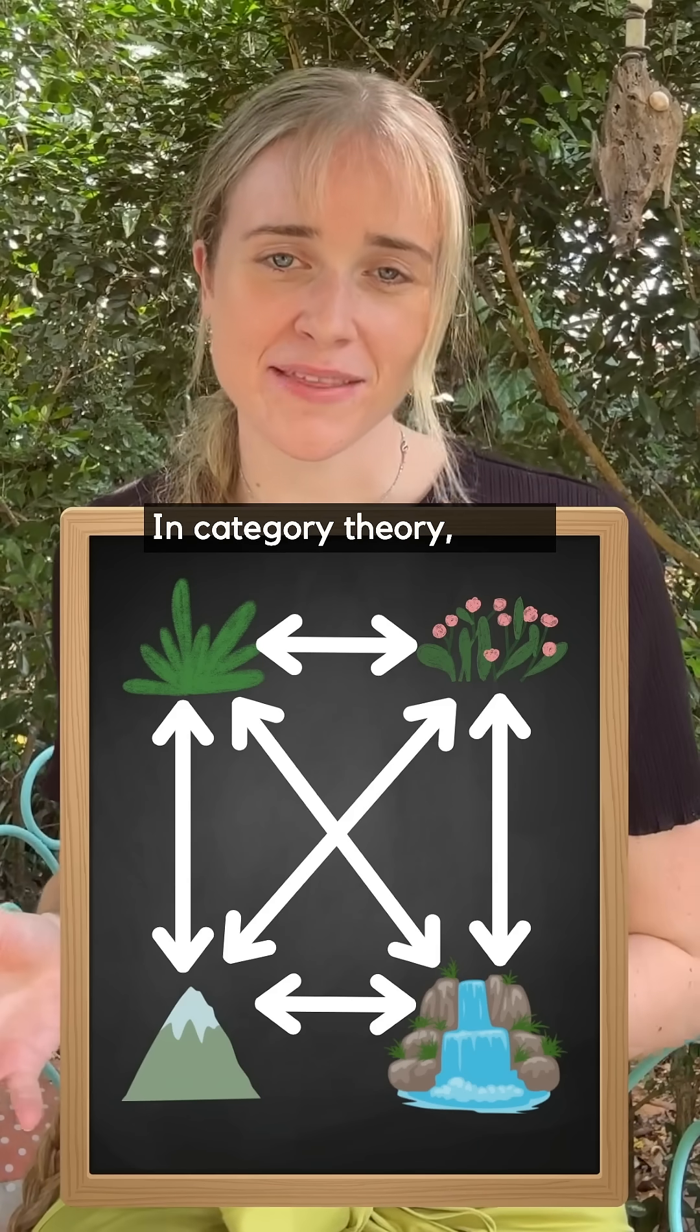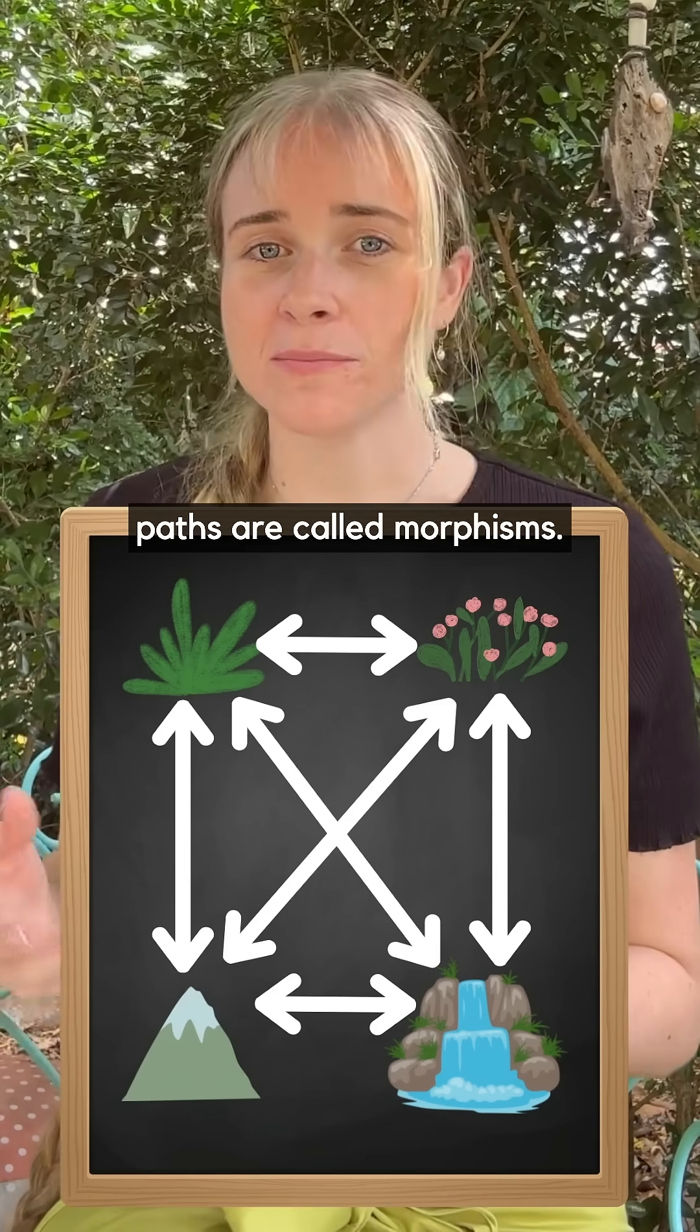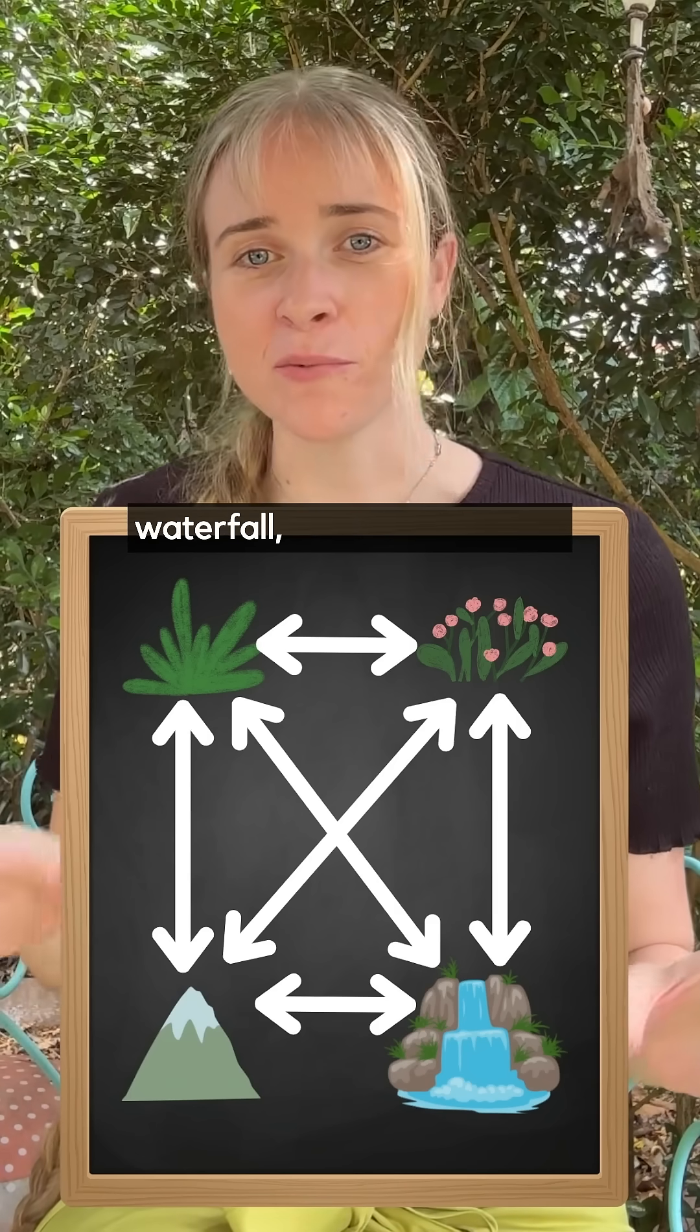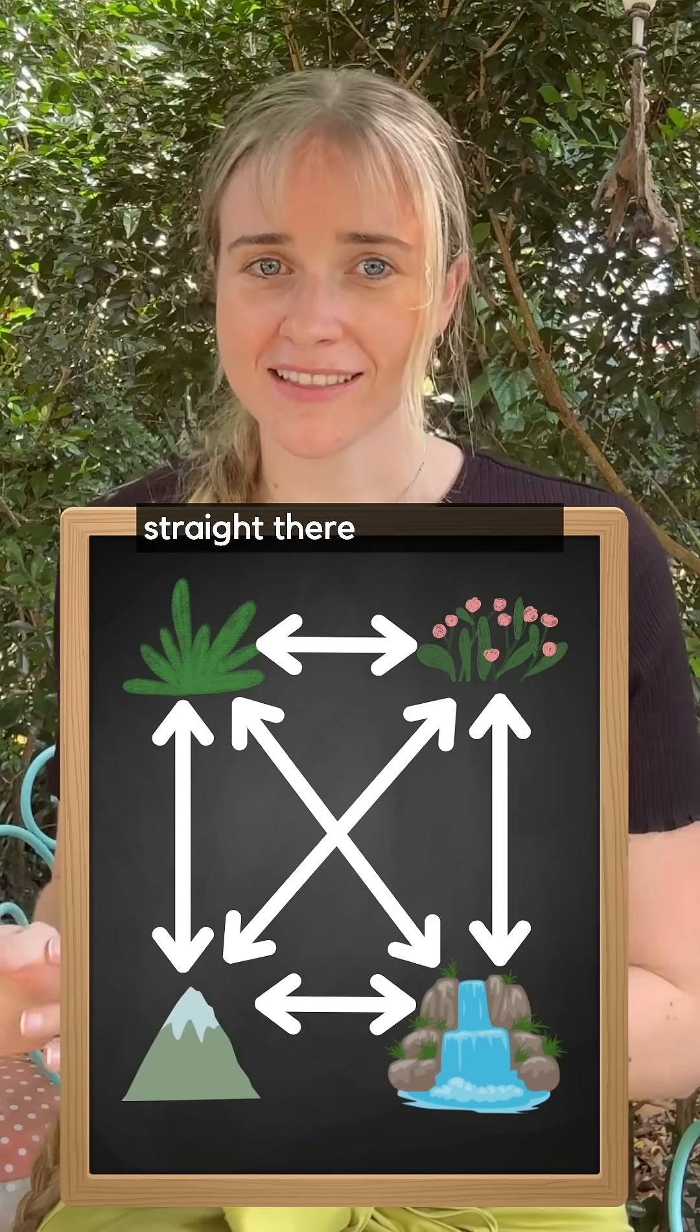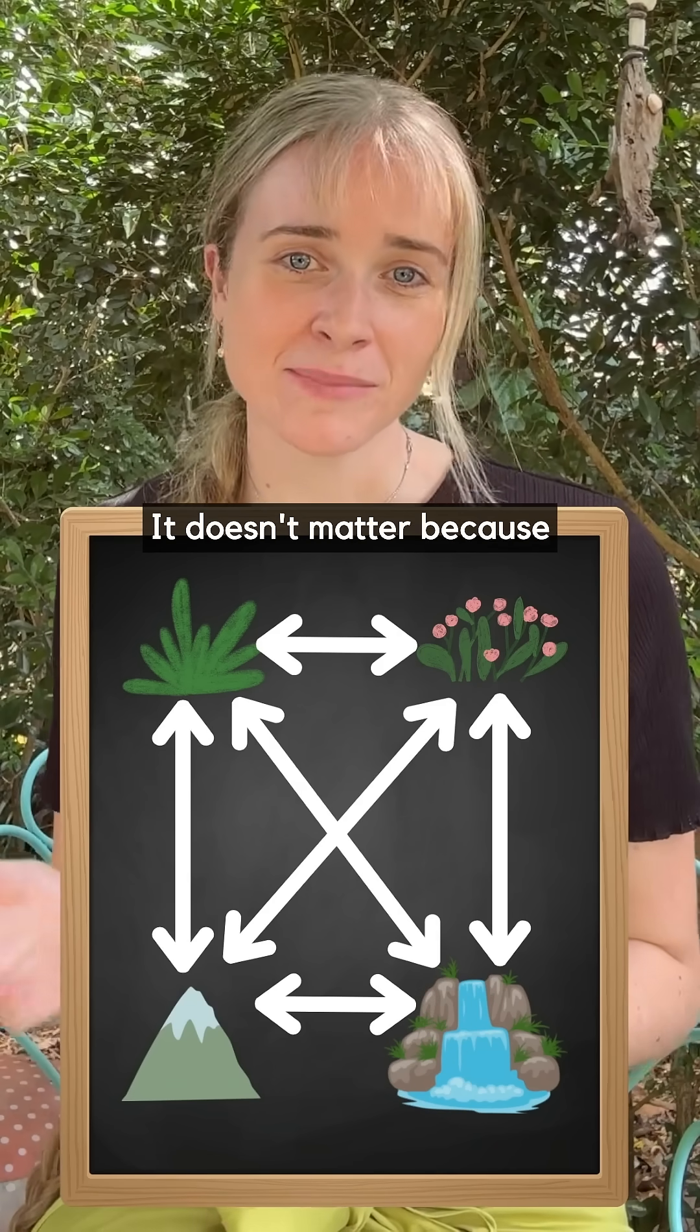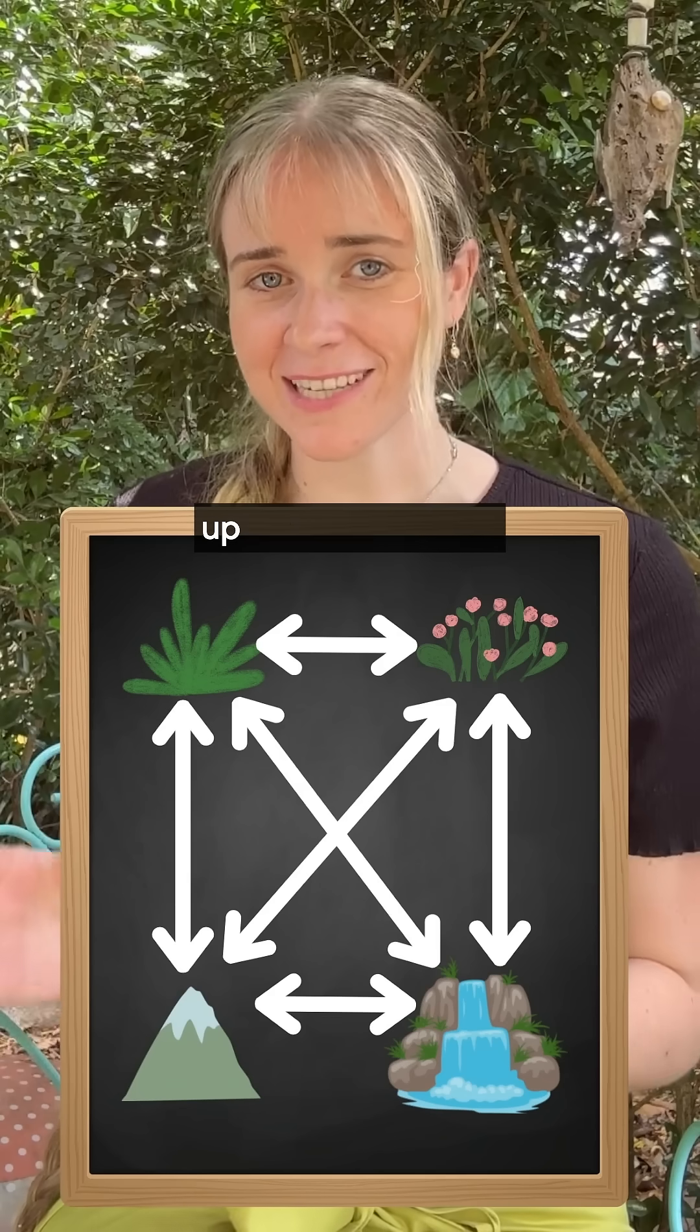In category theory these paths are called morphisms. If you start at the meadow and want to get to the waterfall you can either go straight there or you could go via the rose garden. It doesn't matter because in both cases you end up at the waterfall.